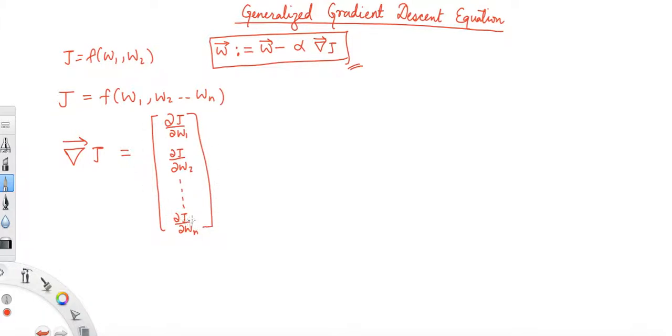So this is a vector representation whose dimension is n by 1. In this case, these equations can be expanded to n equations like w1 is assigned w1 minus alpha times del J over del w1.